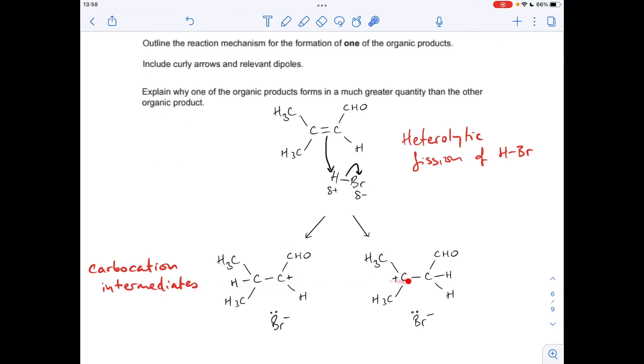So there's the structures of my two carbocation intermediates. So on the left-hand one, the hydrogen is bonded to that left-hand carbon, there it is there. That leaves a positive charge on the other carbon and that becomes a Br- ion. Or on the right-hand side, the hydrogen is bonded to this carbon, there it is there. Positive charge on the other carbon, Br- ion again.